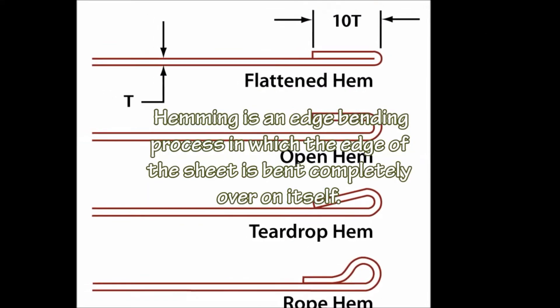Seaming is a sheet metal joining process that involves bending the edges of two parts over on each other. The strength of the metal resists breaking the joint because the material is plastically deformed into position. As the bends are locked together, each bend helps resist the deformation of the other, providing a well-fortified joint structure. Double seaming has been employed to create watertight or airtight joints between sheet metal parts.